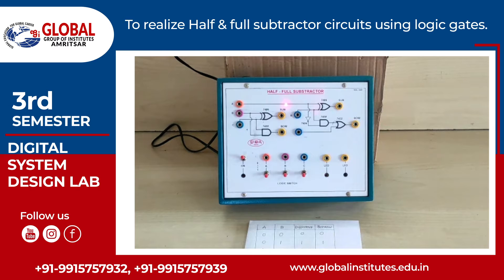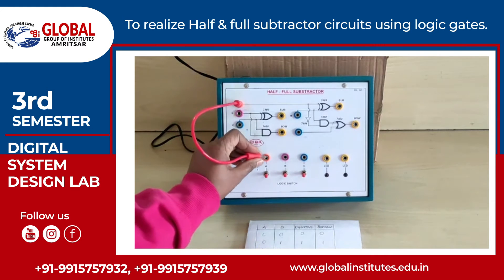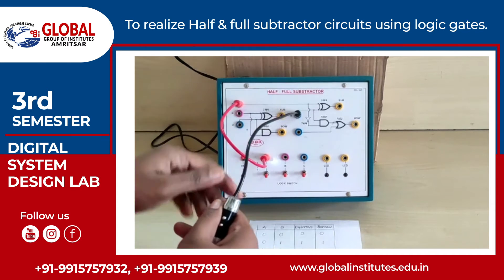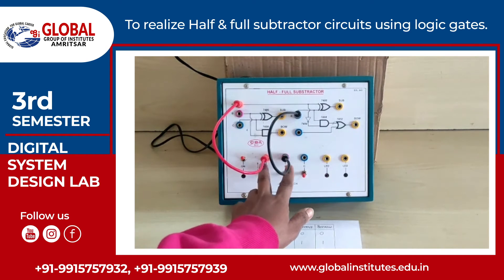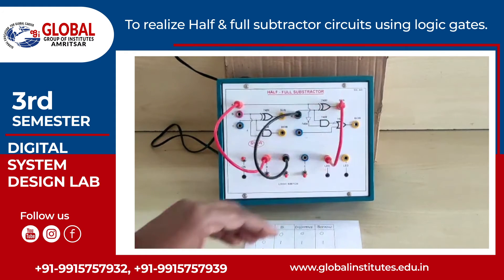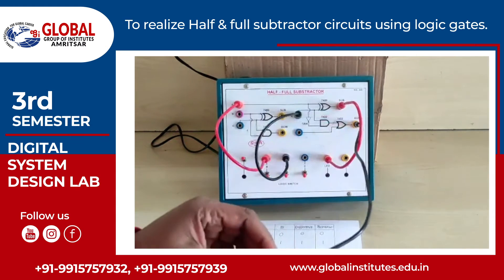The half subtractor is used for subtracting two bits, so there are two inputs and two outputs. The inputs are A and B, and the outputs are difference and borrow. We will now connect the circuit of the half subtractor using connecting leads. Input A is connected to the first switch, input B is connected to the second switch. The difference output is connected to the first LED and the borrow output is connected to the second LED.